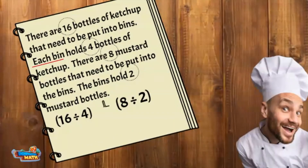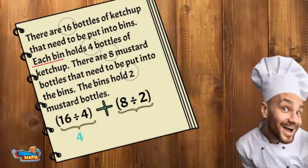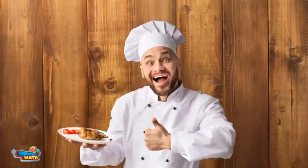I want to know how many bins I need altogether, so I need to add the number of bins for ketchup and the number of bins for mustard. 16 divided by four equals four, and eight divided by two equals four. Four plus four equals eight — I need eight bins. Thank you for your help today. I sure hope dinner goes smoothly. Bonjour!